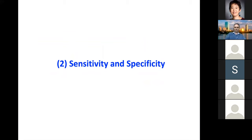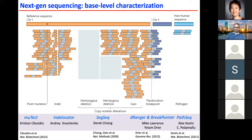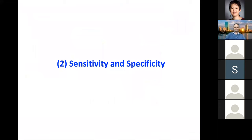Student question: How do you distinguish what is a cancerous point mutation versus a normal variant or SNP found across the population? The instructor responds: I will discuss this in a few slides, so we'll get back to that soon.